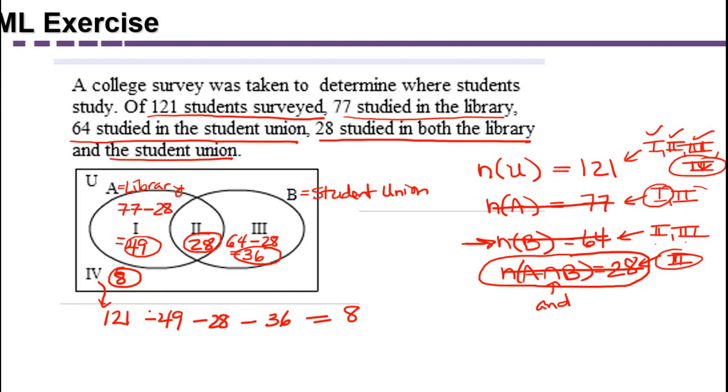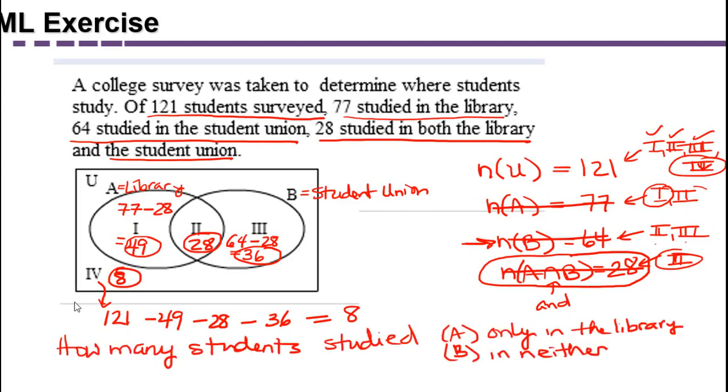Sometimes, though, we'll follow up with a question about the data. For example, we might ask how many students studied only in the library, and that's referring to region 1. So the answer to that question would be 49.